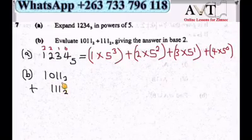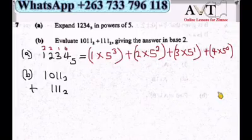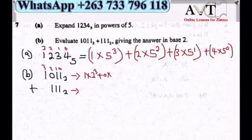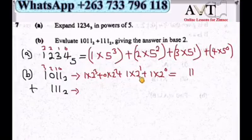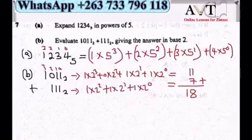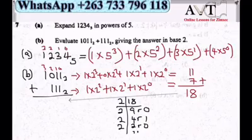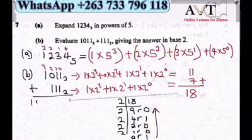Question 7b: Evaluate the binary addition. Convert each number to base 10 first. For the first number: 1×2³ + 0×2² + 1×2¹ + 1×2⁰ = 8+0+2+1 = 11. The second number converts to 7. Then 11 + 7 = 18. Convert 18 to base 2 by repeated division: 18→9 r0, 9→4 r1, 4→2 r0, 2→1 r0, 1→0 r1. Reading remainders upward: 10010 base 2.